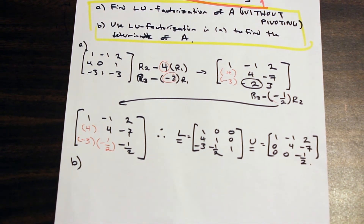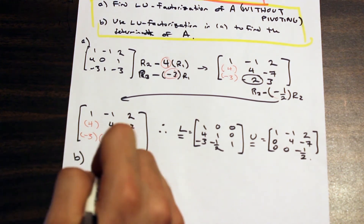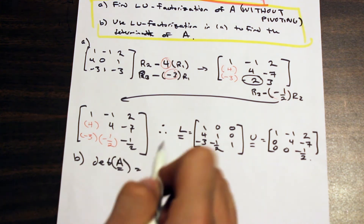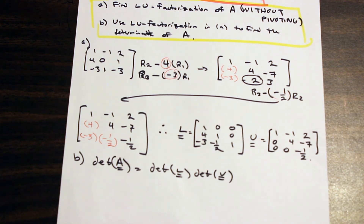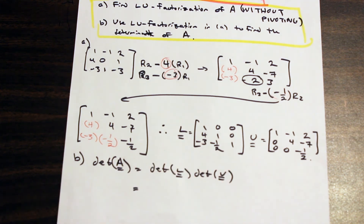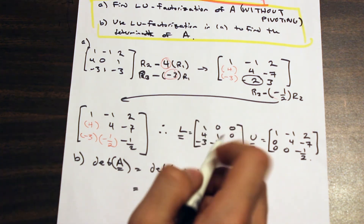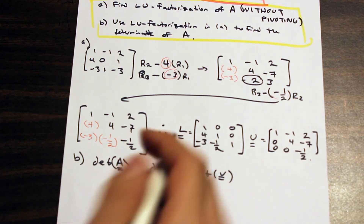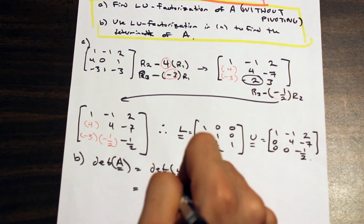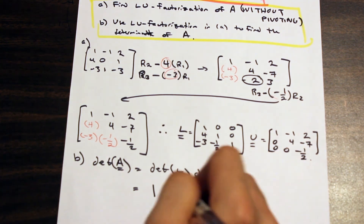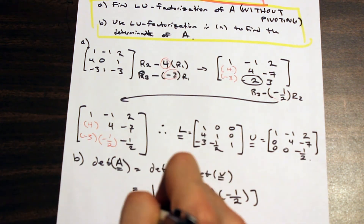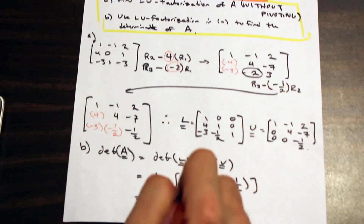Part B asks us to use LU factorization to find the determinant of A. This is straightforward: the determinant of A equals the determinant of L times the determinant of U. The determinant of L is 1 (product of its diagonal ones). The determinant of U is the product of its diagonal: 1 times 4 times (negative one half) equals negative 2. So the determinant of matrix A is negative 2.